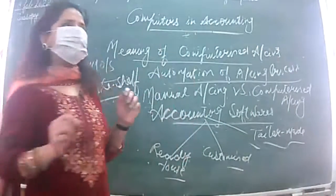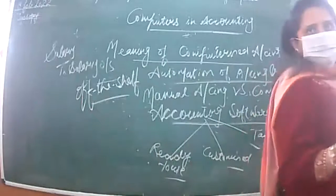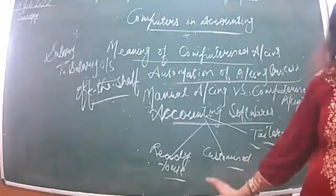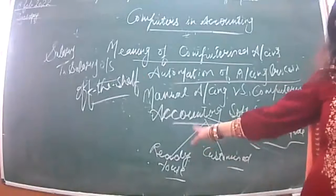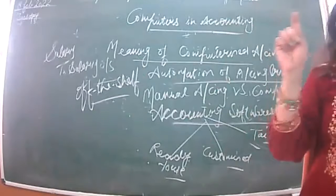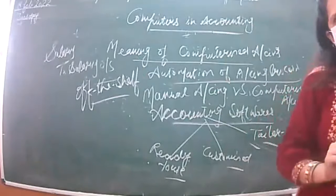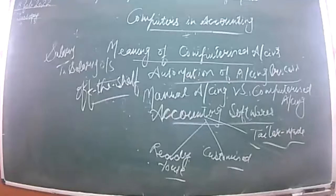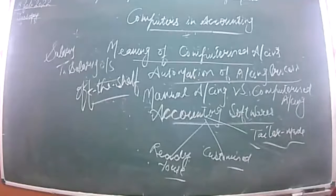Now, the meaning of customized software: in ready-made softwares, changes are possible — you can add or delete features to suit your specific requirement. Those are called customized softwares. The merits and demerits of customized software are the same as ready-made software. The term customized software means making changes in the ready-made software to suit the specific requirement of the user — making it user-specific. For example, if you don't need a certain feature, the seller can delete it and reduce the cost.